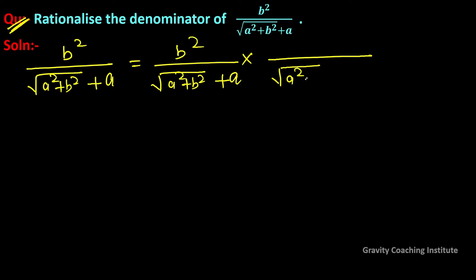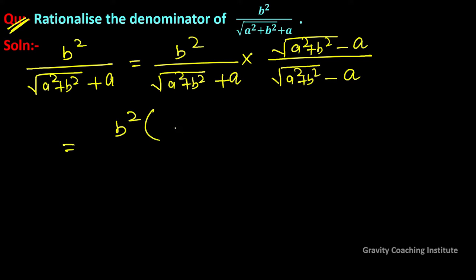The denominator is under root (a² + b²) plus a, so with the opposite sign we multiply by under root (a² + b²) minus a. The numerator will also be multiplied, giving b² into bracket of under root (a² + b²) minus a, upon...